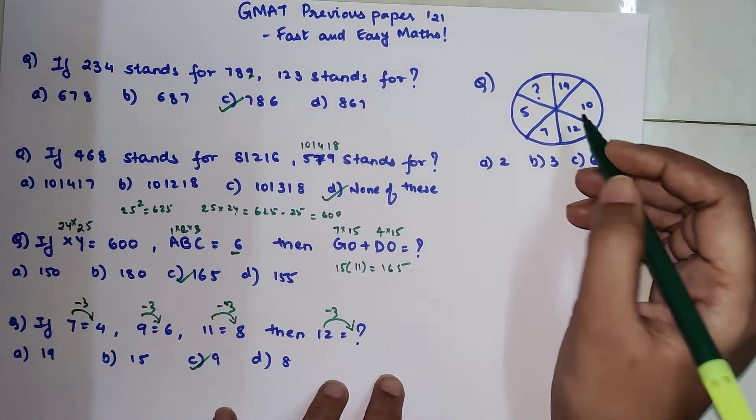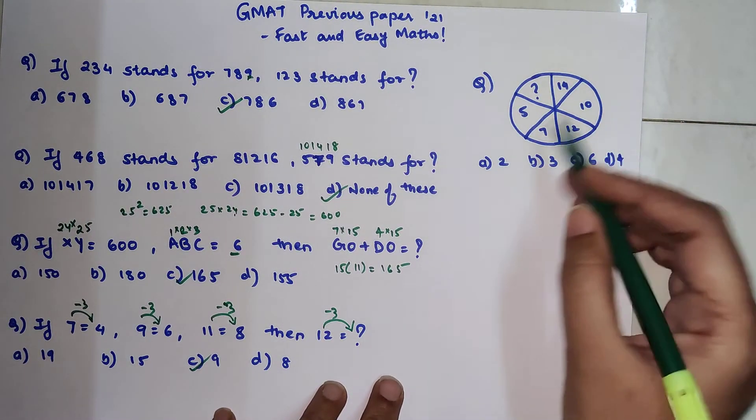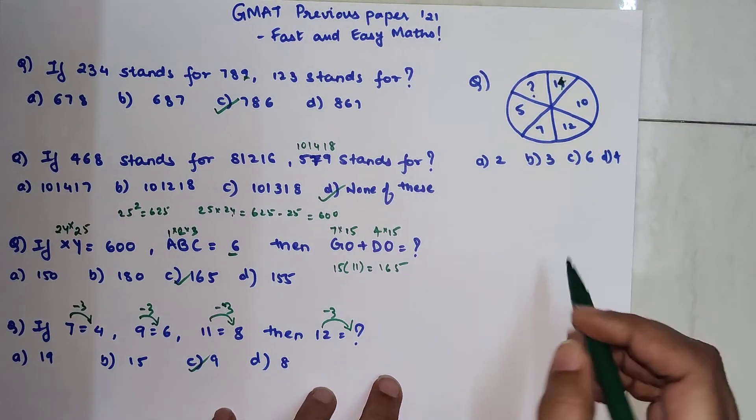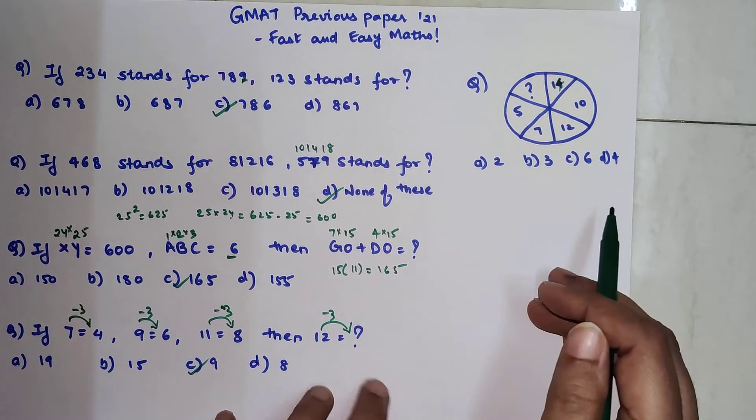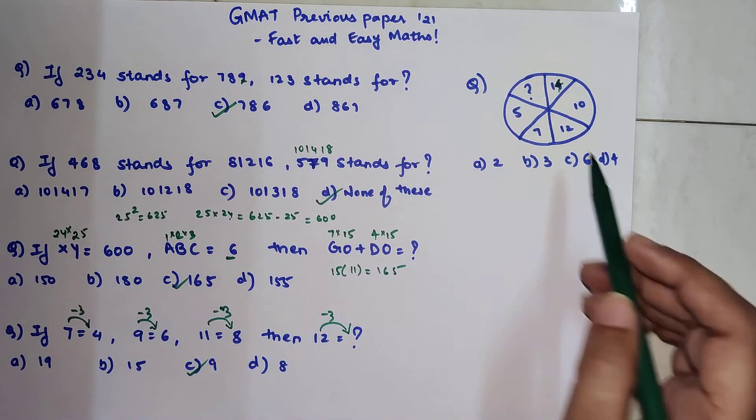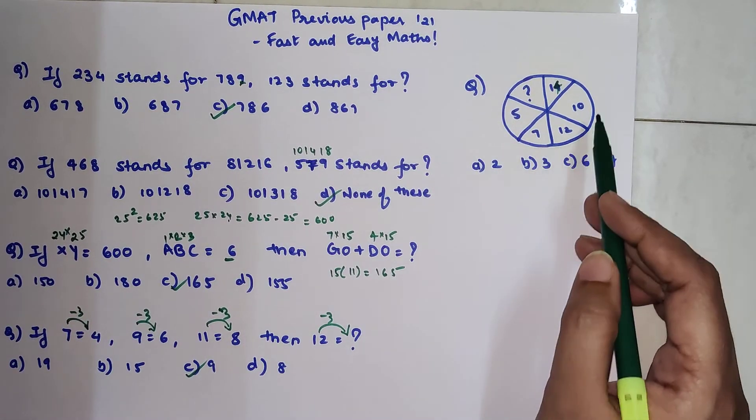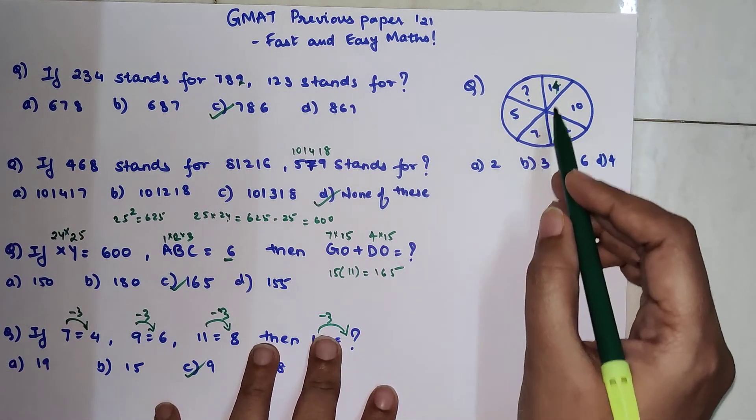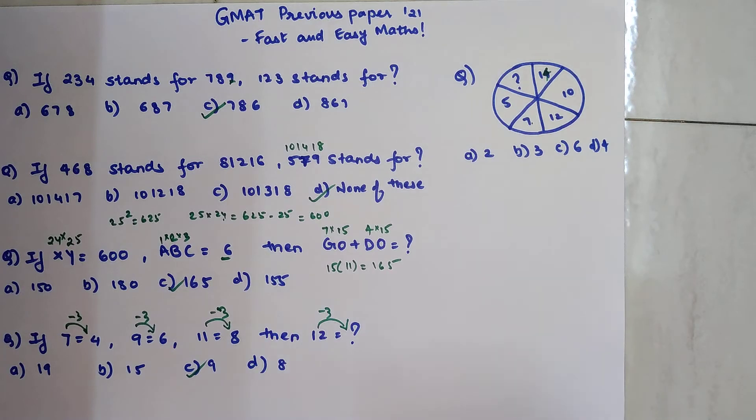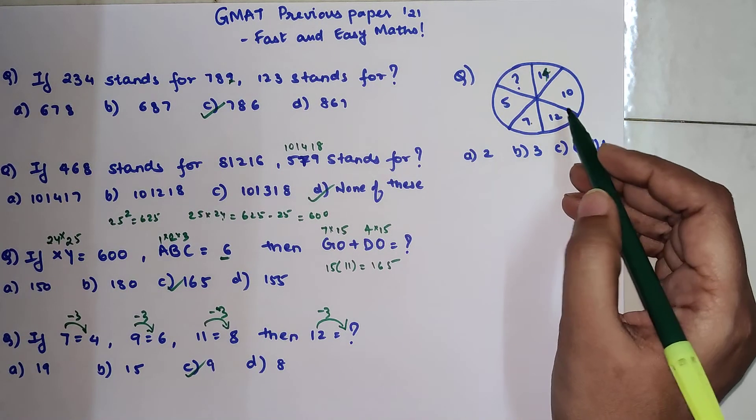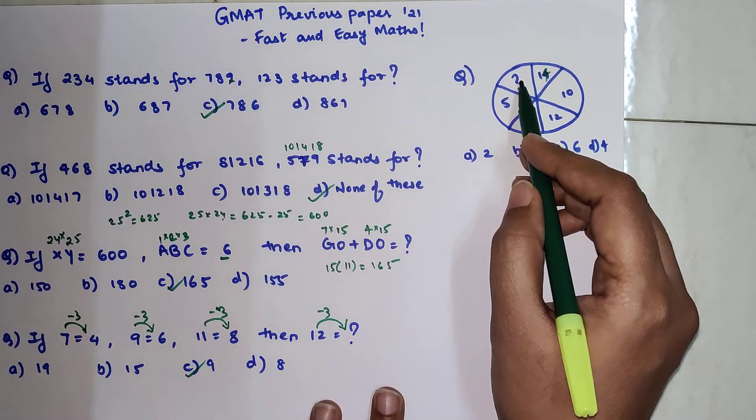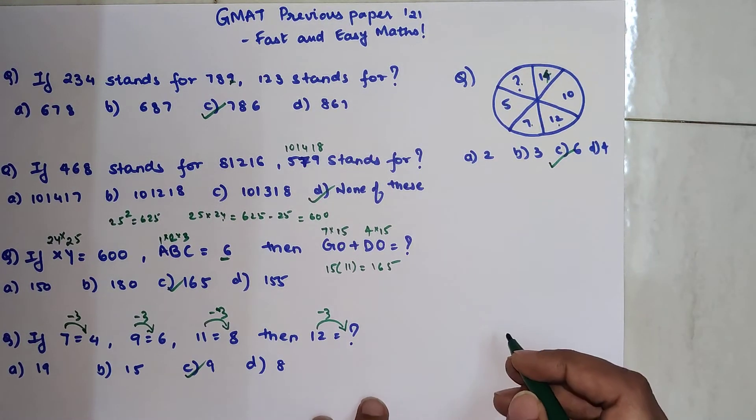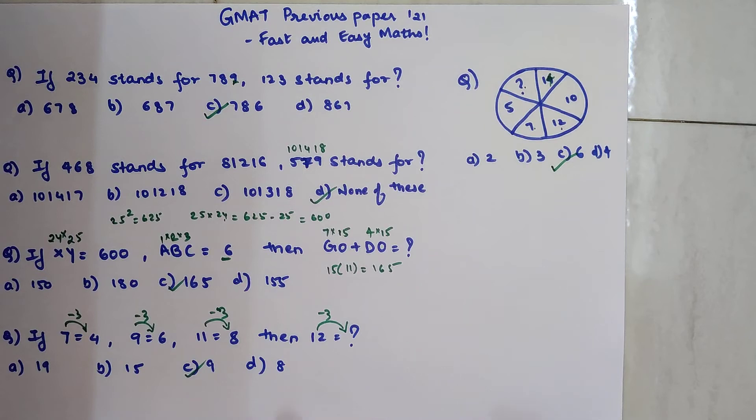So now there is something like a wheel over here given and they have given us few numbers and so this is 14. And in that they are asking us to find one of the element which is empty. So now we have 5, 7, 12, 10 and 14. If you look over here 5 when you double it you get 10. 7 when you double it you get 14. So what should be happening over here? We should have 6 when you double this you get 12. So your answer over here is option C.